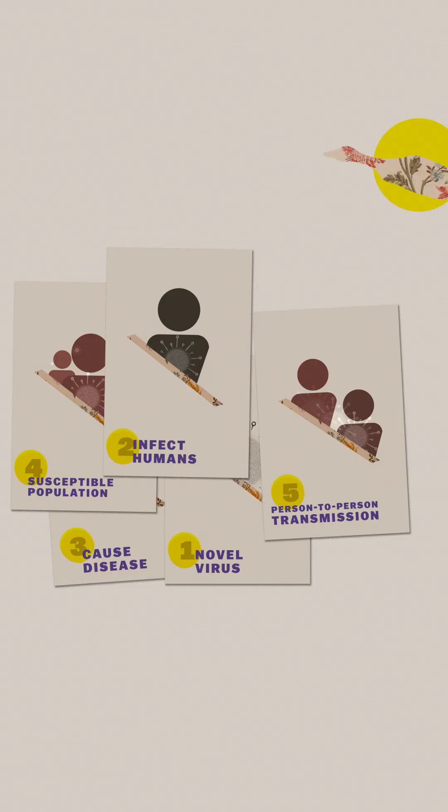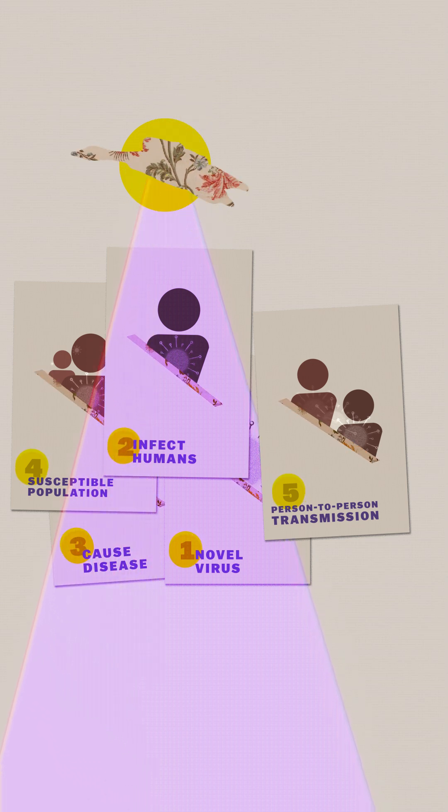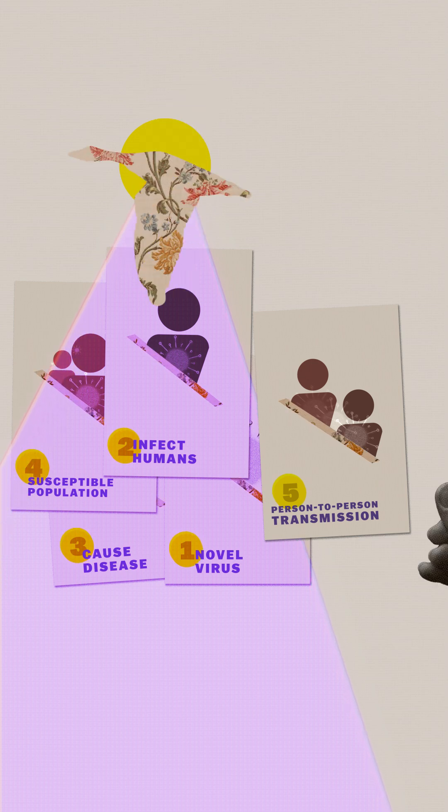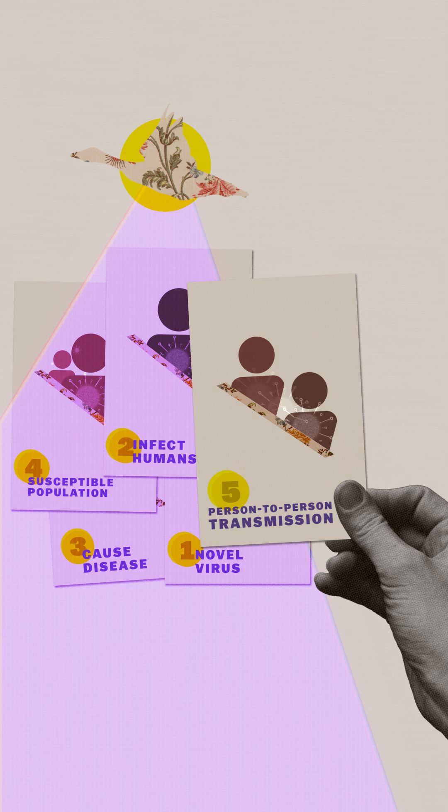So what the H5N1 viruses have are that they're novel, they infect people, they cause disease, and the population is susceptible. But they have not yet demonstrated the ability to spread efficiently from person to person.